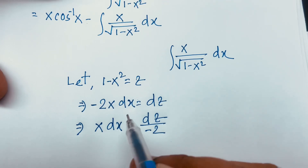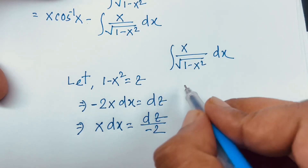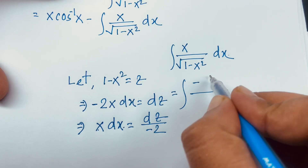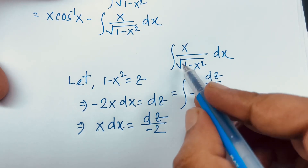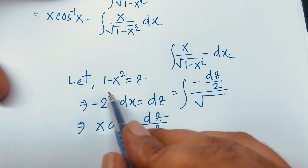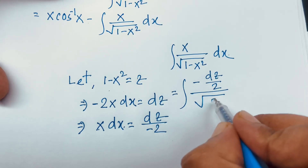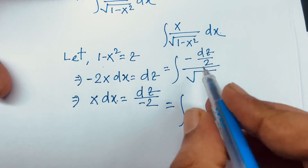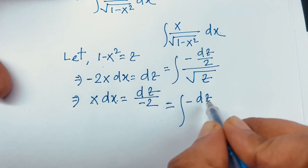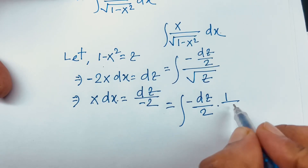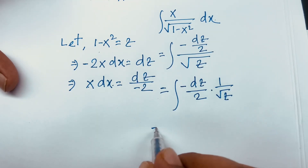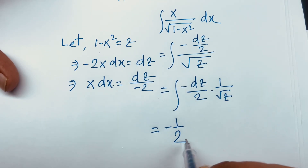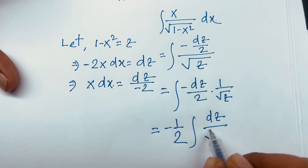So at this moment, if I substitute into the equation: x dx becomes minus dz over 2, and square root of (1 minus x squared) becomes square root of z. So this becomes the integral of minus dz over 2 times 1 over square root z, which equals minus 1 over 2 times the integral of dz over square root z.